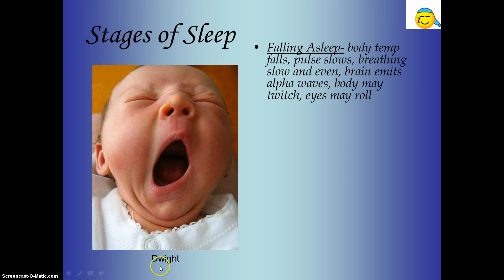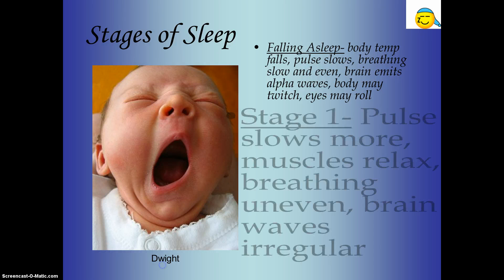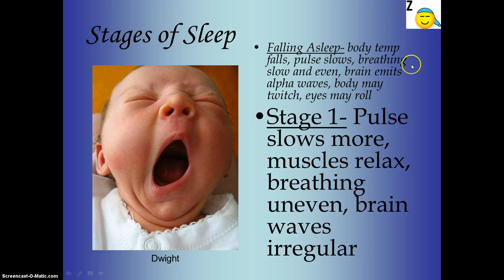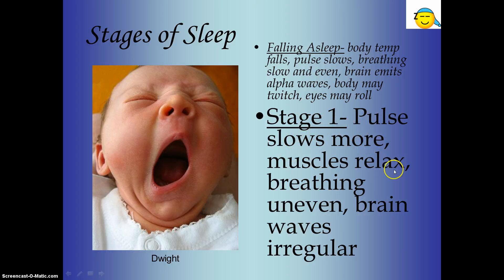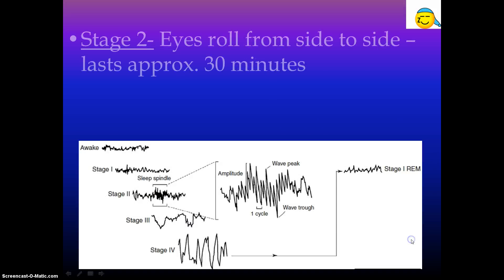So the stages of sleep. You only need to write stage one. In terms of falling asleep, you'll notice that your body temperature falls — that's why you might want more blankets. Your pulse is slowing, your breathing is slowing and getting more even, and you're emitting alpha waves. Your body might twitch a little, your eyes might roll. Now in stage one, we're actually asleep. Your pulse slows even more, your muscles are relaxing, your breathing gets a little more uneven, and your brain waves — those alpha waves — are becoming a bit irregular. You can see it here: awake versus asleep, starting to spread out.